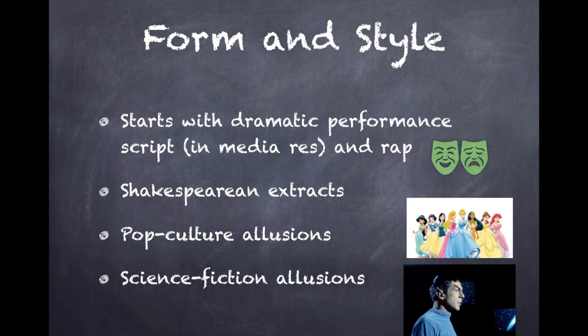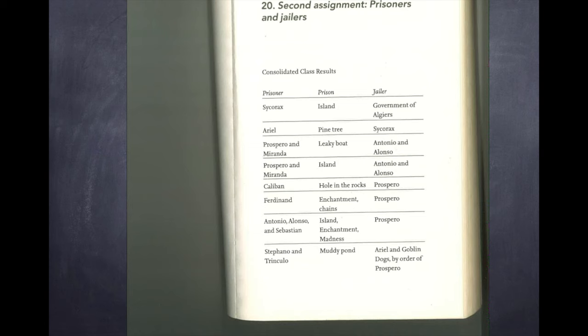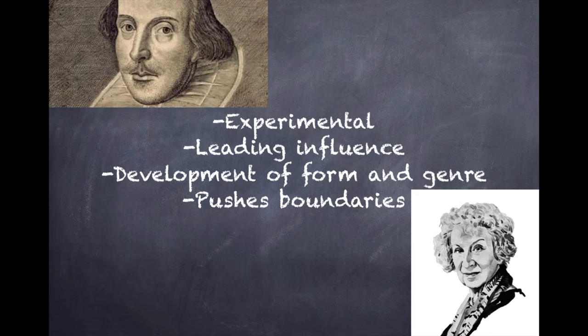Atwood's experimental use of form also includes starting the novel with a dramatic script and a rap in medias res. Other examples include her inclusion of Shakespearean extracts, creative and playful references to pop culture — 'Felix consults his list: Snow White he reads, Jasmine, Pocahontas' — and science fiction elements: 'a Star Trek kind of thing, he's an alien' — as well as songs, lists and director notes. Like Shakespeare, who was an experimental and leading influence in the development of theatrical form, Atwood constantly pushes the boundaries of genre and form in her novels.